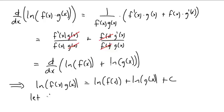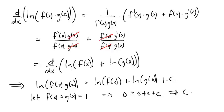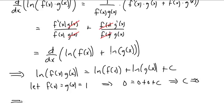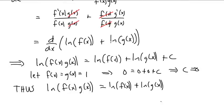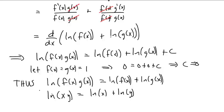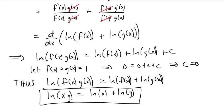If we let f(x) and g(x) both equal 1, we get 0 = 0 + 0 + c, therefore c is 0. Thus, the natural log of f(x)·g(x) is the natural log of f(x) plus the natural log of g(x). Or, to put it in more familiar notation: ln(xy) = ln(x) + ln(y). Another one of our standard properties of the natural log.